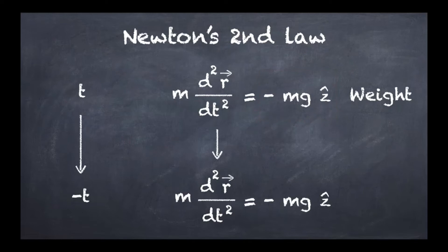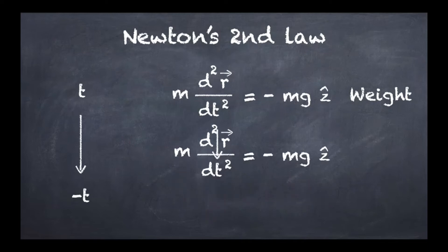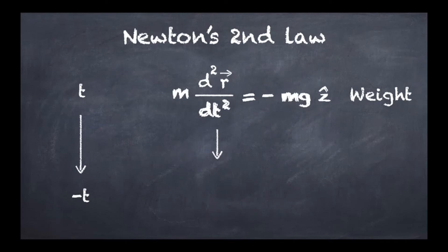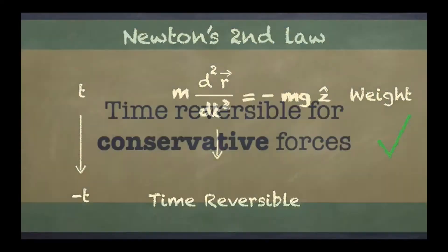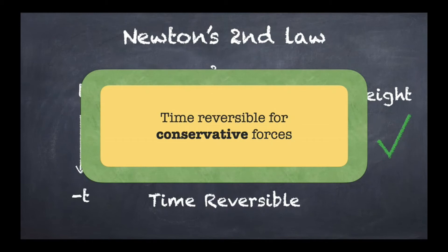If we check how this transforms upon reversing time, it looks exactly the same. Both m and g are constants — they don't depend on time — so we get the same outcome. Comparing the two, they are exactly identical. Because they are identical, this particular equation is time reversible. It turns out that weight is a very specific example of a larger class called conservative forces, and Newton's second law is time reversible for conservative forces.